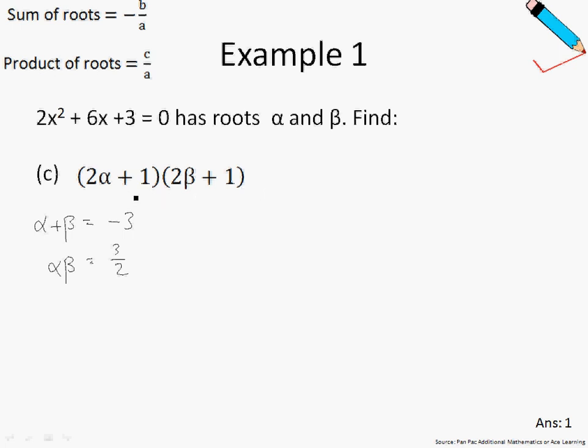So in this question, we're dealing with (2α+1)(2β+1). So what I'm going to do here is to expand out this expression. So expanding this out, 2α times 2β will give me 4αβ. Following that, I'll get 2β, 2α, and 1. So let me just factorize out some terms to make it look more obvious to you.